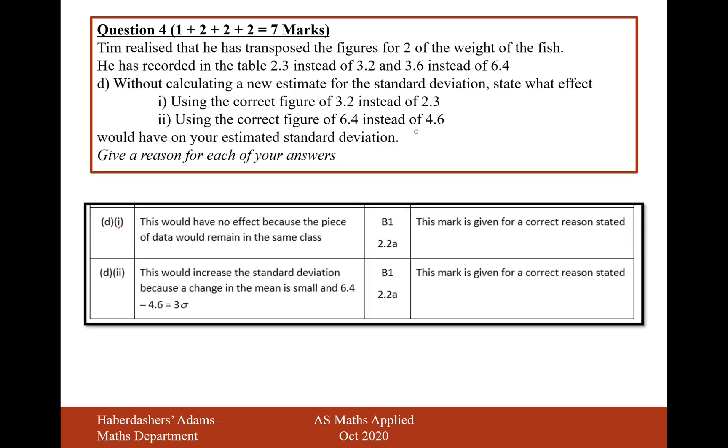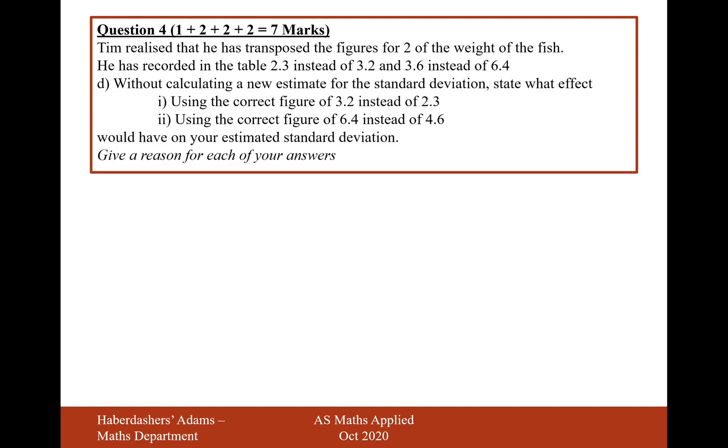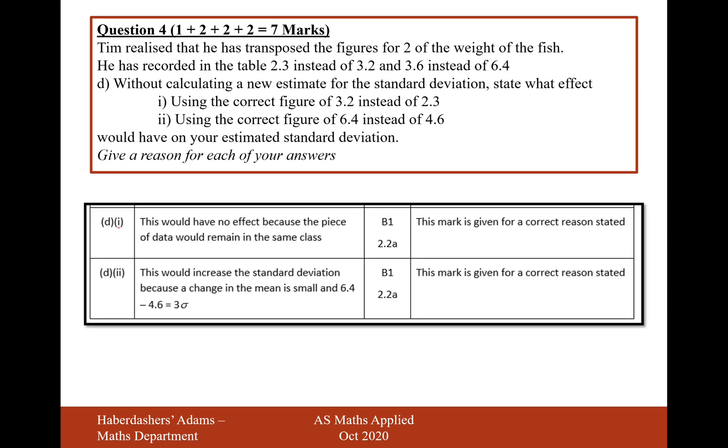And using 6.4 instead of 4.6, this would increase the standard deviation because a change in the mean is small. And 6.4 minus 4.6 is equal to 3 sigma. So let's just have a little look at what that means there. So 4.6 and 6.4, they're going to be completely different positions here, which is going to be statistically different from the mean. The mean is going to be 692 over 160. So it's quite a way further from the standard deviation than it was before. And it's also in a different group as well. So it's in a different group and it's quite a way further from the standard deviation. So, therefore, the standard deviation will increase because the new piece of data is further away.